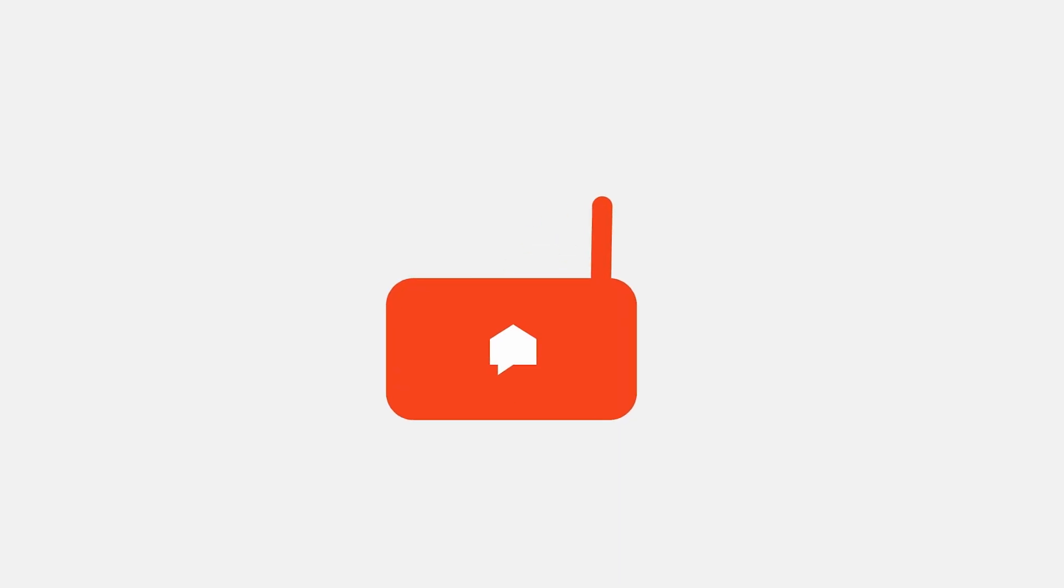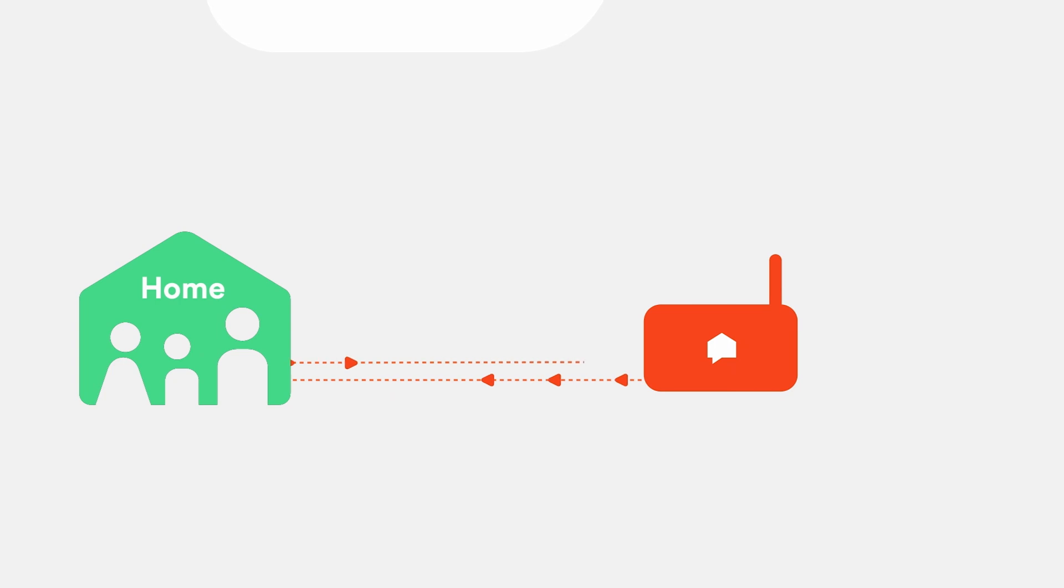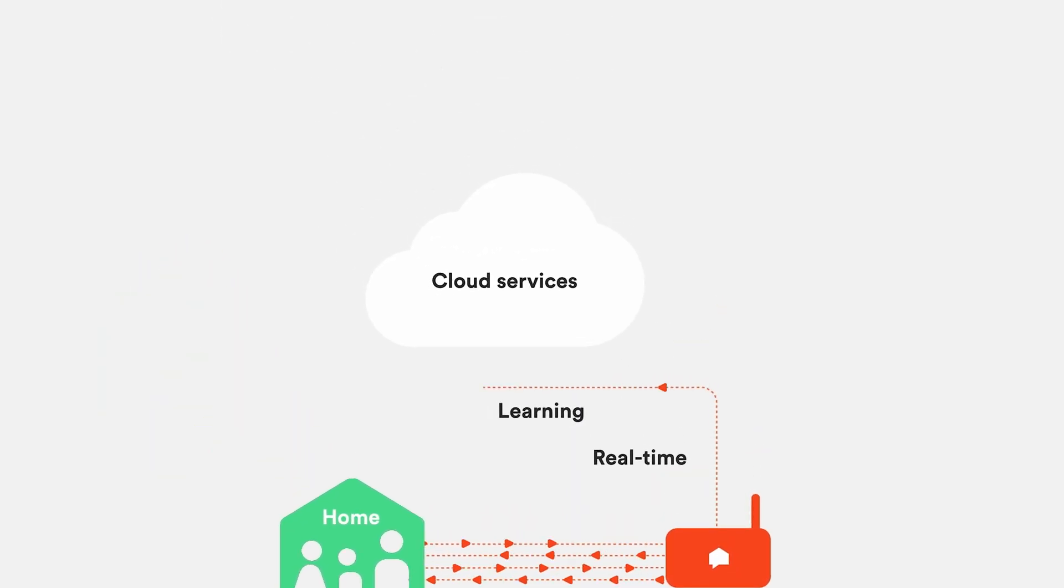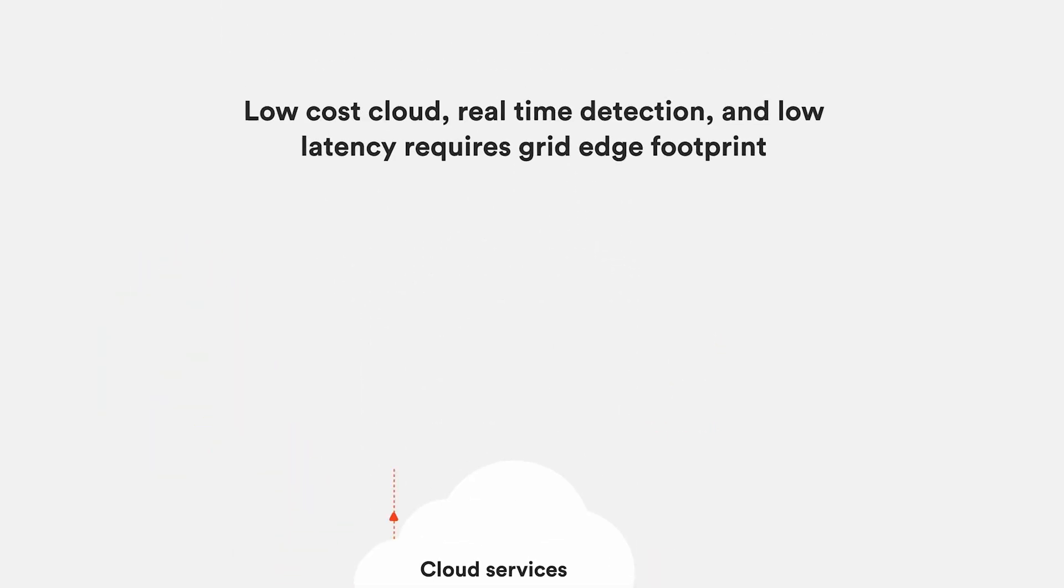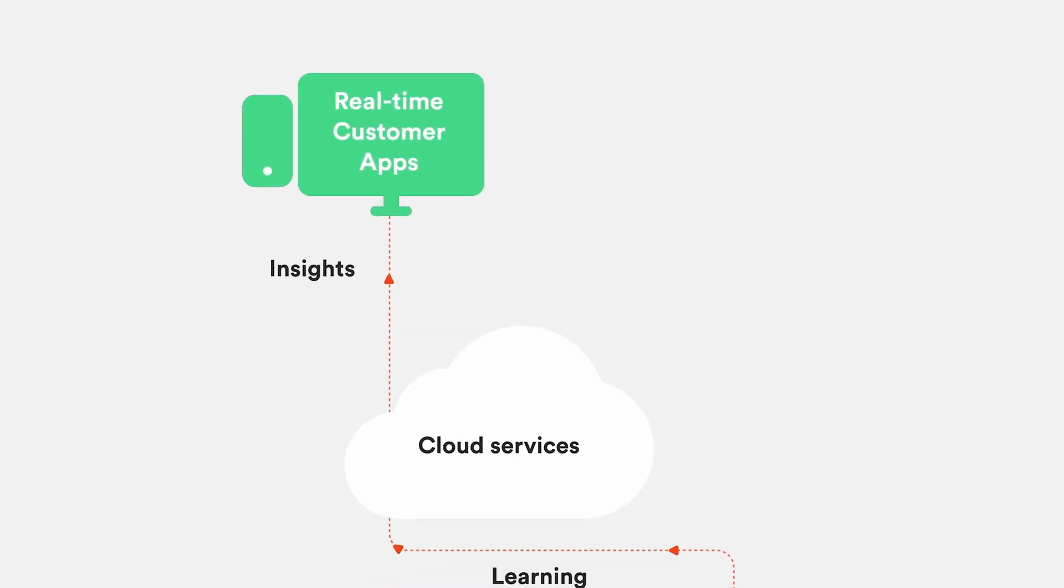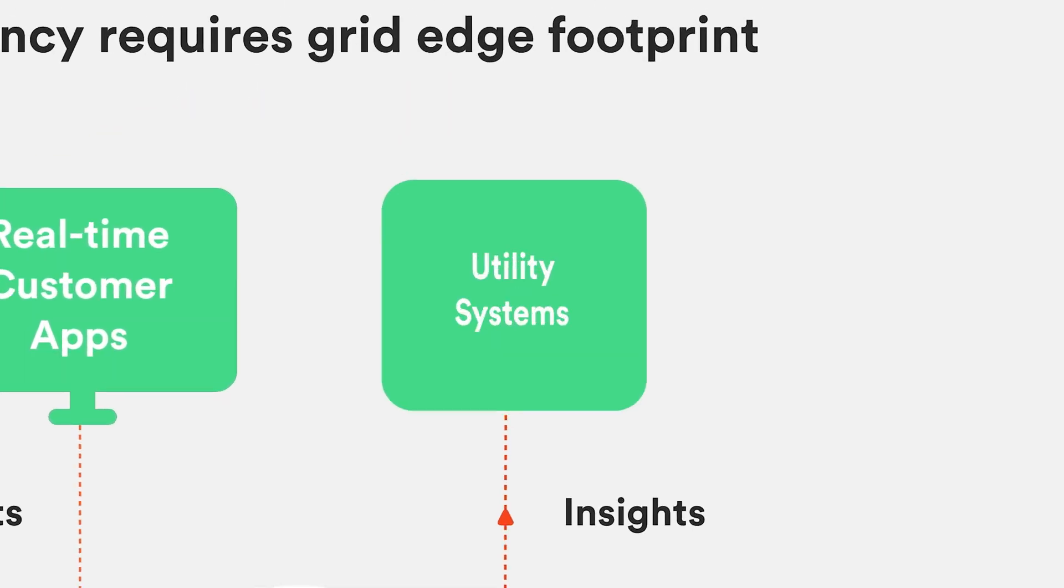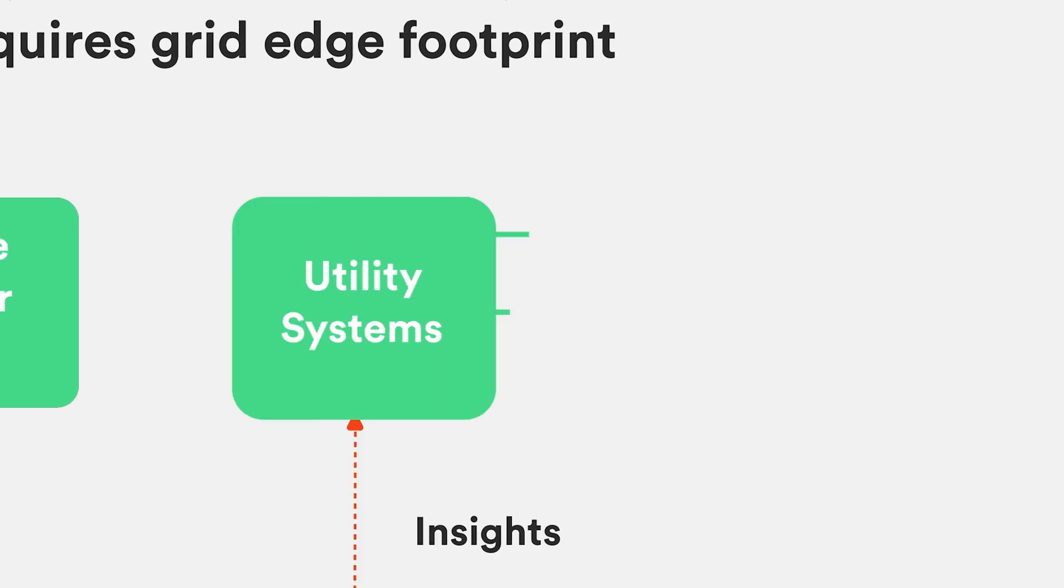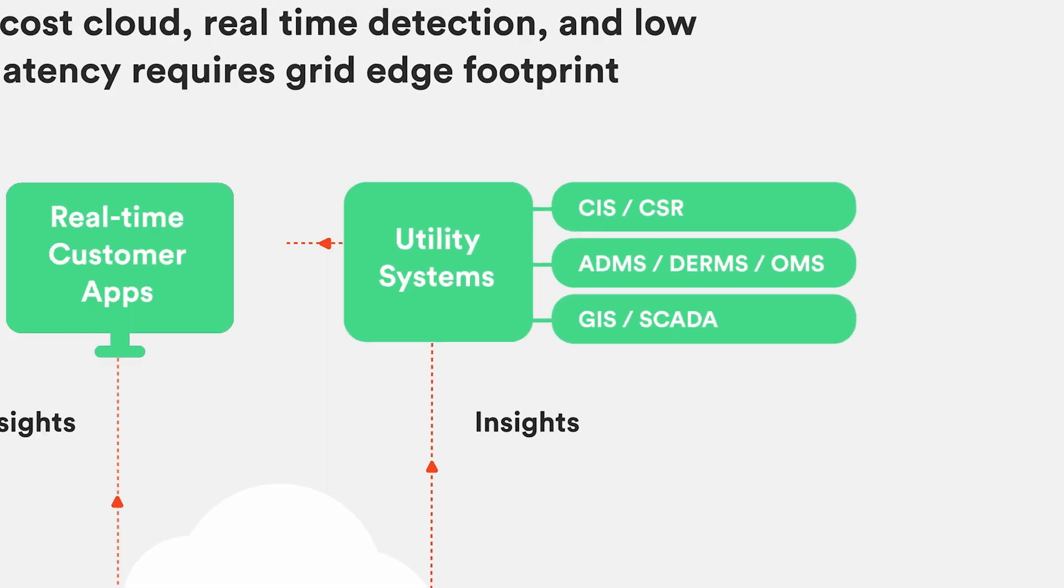Today, the SENSE monitor is installed in the customer's electric panel and connected to SENSE cloud through the home's Wi-Fi network. SENSE provides apps for iOS, Android, and the web. Data can also be integrated into utility customer engagement platforms and other back-office systems through SENSE APIs.